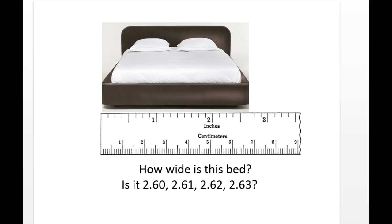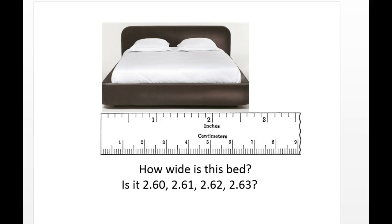Now that you have taken a closer look at it, let's keep on. Irrespective of what the exact answer might be - we can agree on that later - we can agree that the number of certain digits is 2. Those digits are 2 and 6: 2.6. All the answers must have 2.6 because it is very obvious that the bed is not less than 2.6.